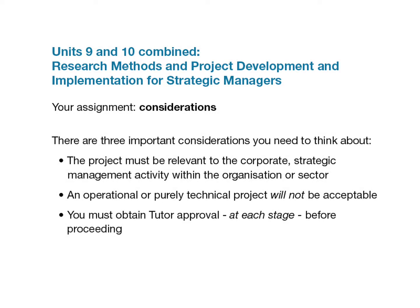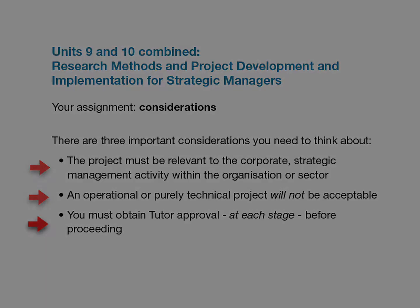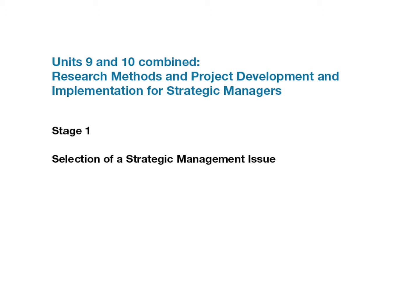The project must be one that is in response to a strategic management issue that involves a range of functional areas and has implications for a number of levels within the organisation's hierarchical structure and implications for the achievement of the organisation's strategic objectives. There are really three important considerations you need to think about. First of all, the project must be relevant to the corporate strategic management activity within the organisation or sector. An operational or purely technical project will not be acceptable, and you must obtain tutor approval at each stage before proceeding. The selected issue must be one that is strategic in nature and which, if not responded to appropriately, may damage the medium to long term prospects of the organisation or of organisations in that business sector.